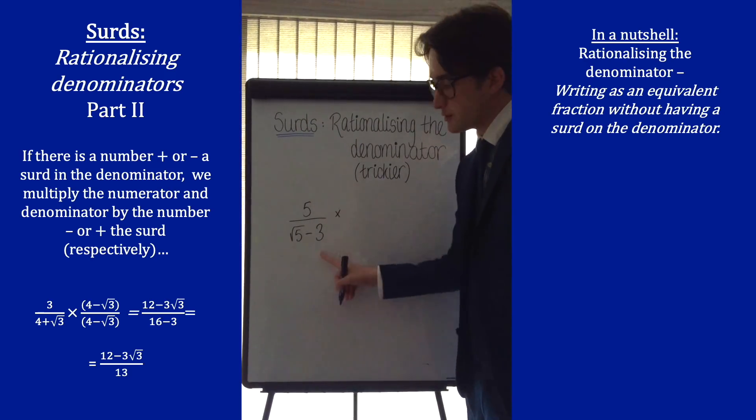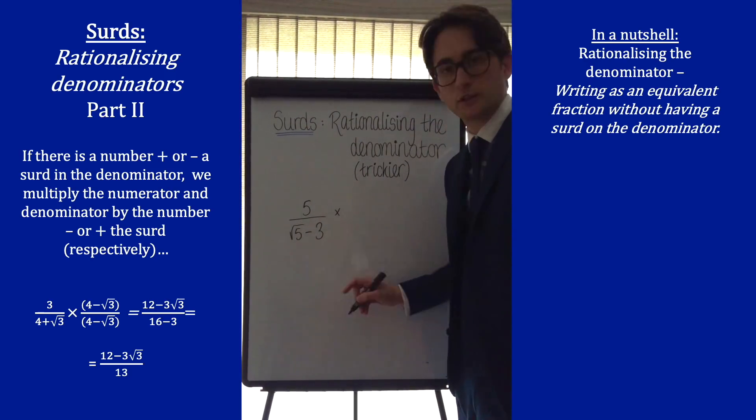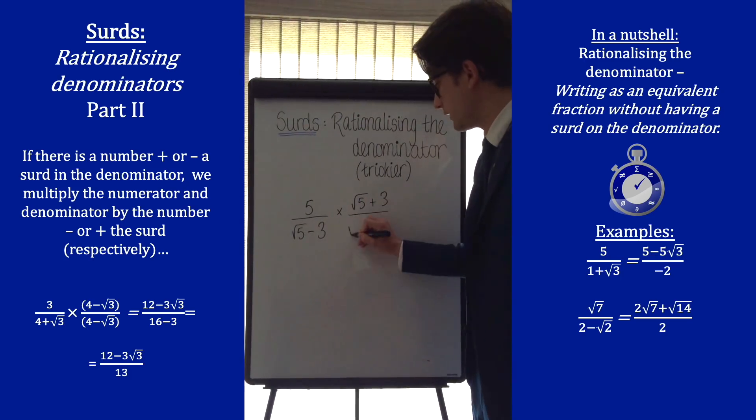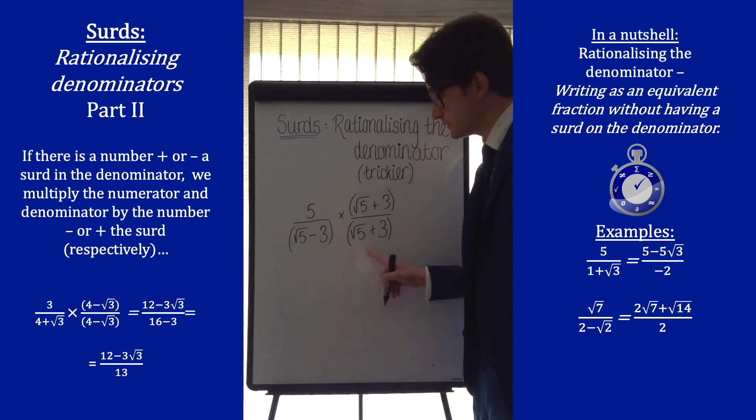Right, so similar thing again, and this time instead of times it by root 5 minus 3, we want to change the sign round. So we're times it by root 5 plus 3 over root 5 plus 3. There's a single bracket expansion on the top and a double bracket expansion on the bottom.